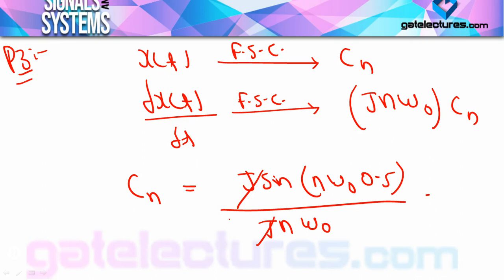In summary, this video covered both concepts and numericals for Fourier series. We studied time-shifting property, linearity property, and differentiation property, along with conclusions about real/even and real/odd signals. If you have any doubts about any concept or numerical, please post in the comment section. The next video will cover more concepts and numericals for Fourier series. Thank you.